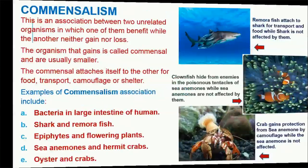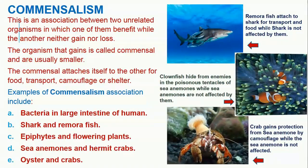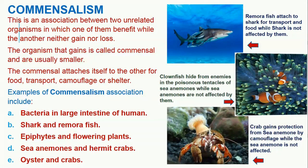The second type is commensalism. This is an association between two unrelated organisms in which one of them benefits while the other neither gains nor loses. The organism that gains is called the commensal and is usually smaller. The commensal attaches itself to the other for food, transport, camouflage, or shelter. An example is bacteria in the large intestine of humans — the bacteria feed on feces, which are waste products, and this feeding does not affect the human in any way.